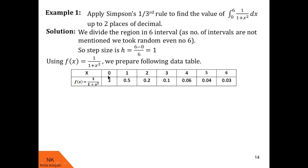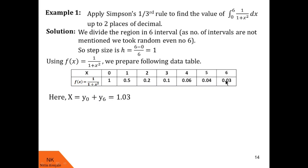When you substitute the x values into f(x) = 1/(1+x²), you get corresponding y values: y₀, y₁, y₂, y₃, y₄, y₅, and y₆. Now let us calculate capital X. We know that X is the sum of extreme ordinates, that is y₀ + y₆ = 1 + 0.03 = 1.03.